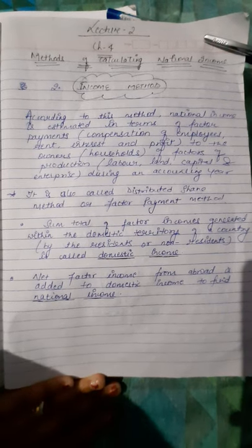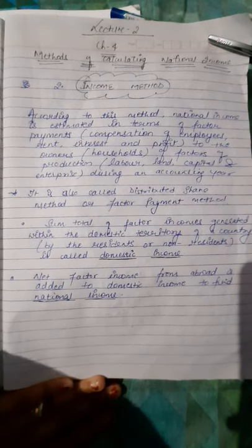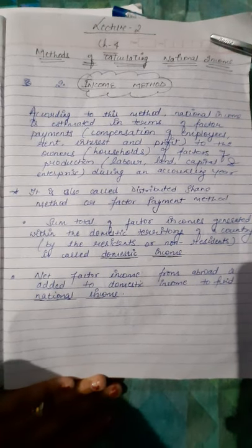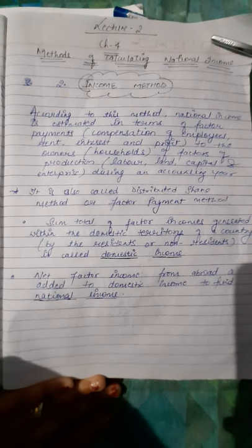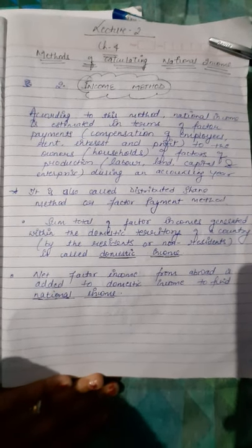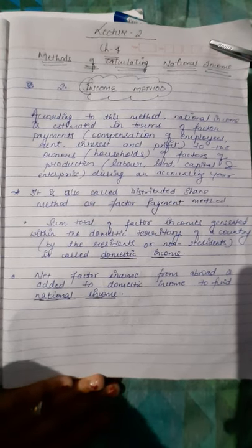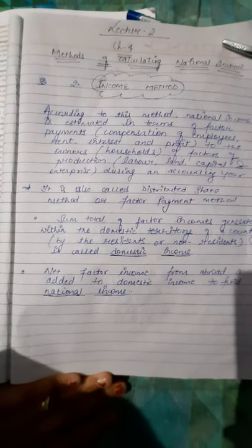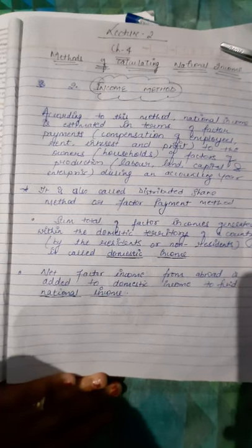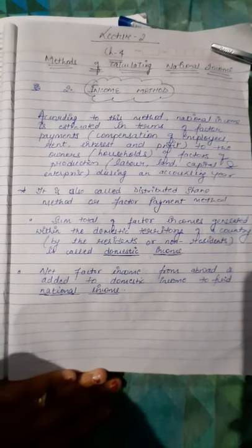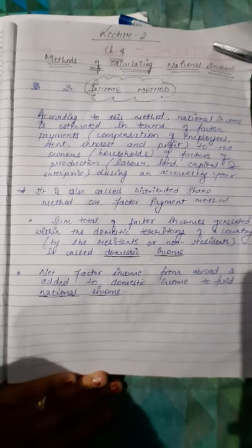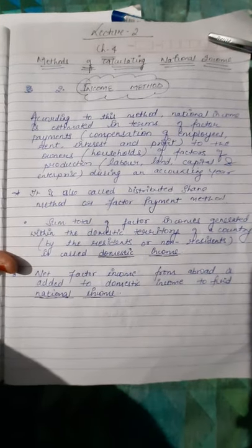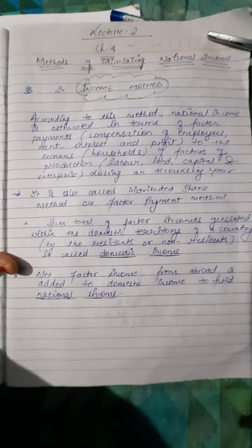In the previous lecture, we studied about Methods of Calculating National Income — the first method, the Value Added Method. Now the second method is the Income Method. According to this method, National Income is estimated in terms of Factor Payments: Compensation of Employees, Rent, Interest, and Profit.